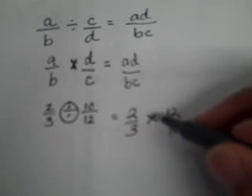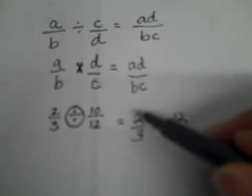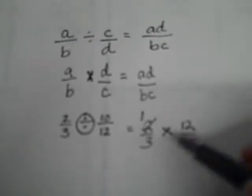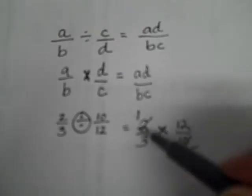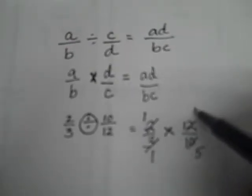I would look to see if I can cross cancel. I can do that because I'm multiplying fractions. 2 and 10 have a common factor of 2, so 2 divided by 2 is 1 and 10 divided by 2 is 5. The only common factor that 1 and 5 have is 1, so I'll move on to the next part. 3 and 12 have a common factor of 3, so 3 divided by 3 is 1 and 12 divided by 3 is 4.